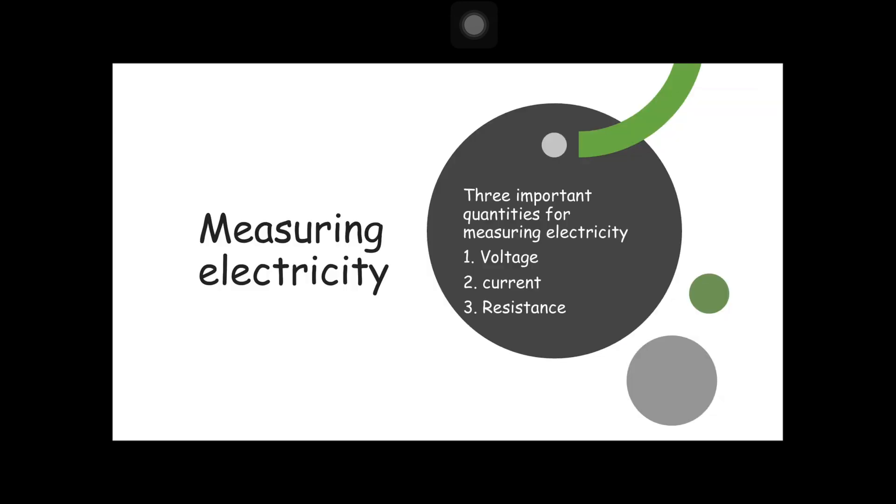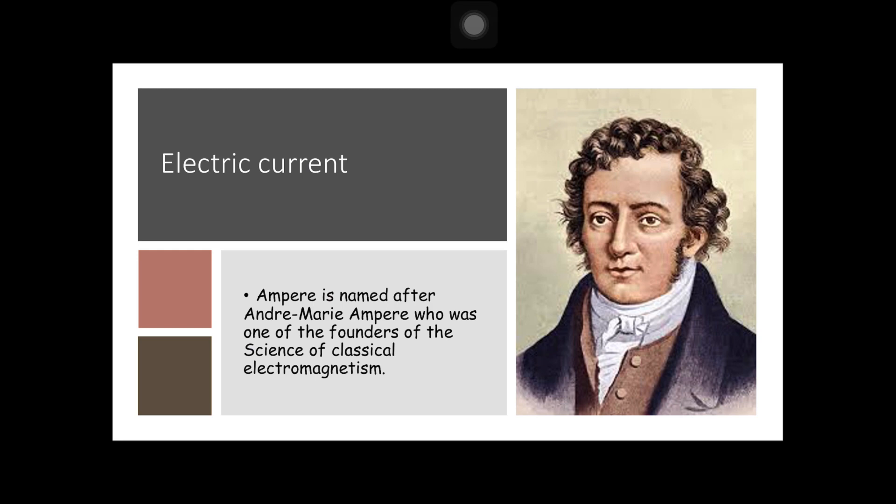How to measure electricity? We have three important quantities for measuring electricity: first, voltage; two, current; three, resistance. First, we have electric current. Ampere is named after André-Marie Ampère, who was one of the founders of the science of classical electromagnetism. So this is André-Marie Ampère.